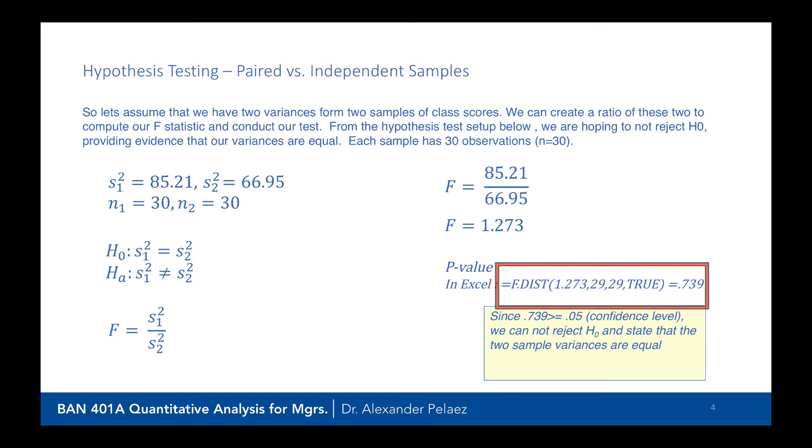One is called the numerator degrees of freedom and the denominator degrees of freedom. So basically, the numerator degrees of freedom is going to be 29 because it's n minus 1 for the top, and the denominator degrees of freedom will be 29, which is n minus 1 degrees of freedom for the bottom.